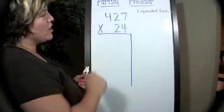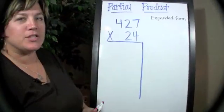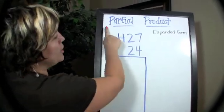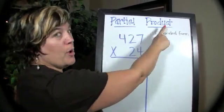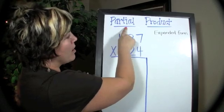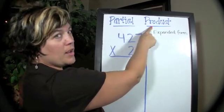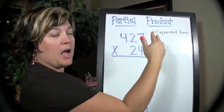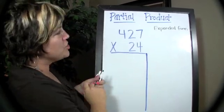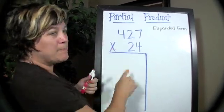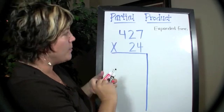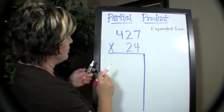So we're going to start right here. I'm going to show you a few different things that we're going to be talking about. When we look at partial products, we're looking at part of the product being found at a time. We're going to start by using expanded form to help us figure this out.